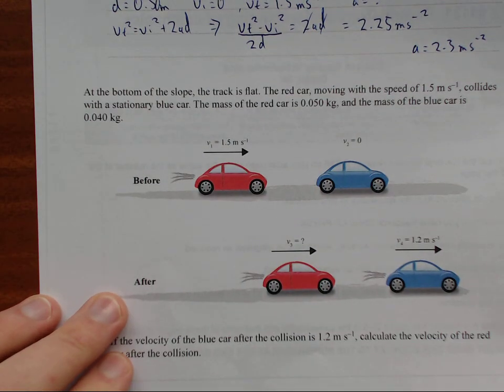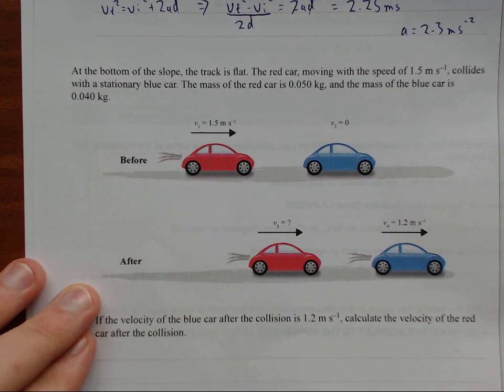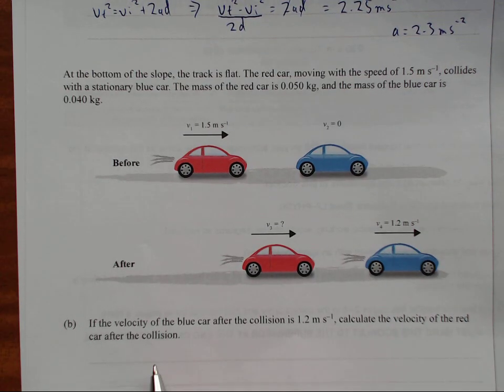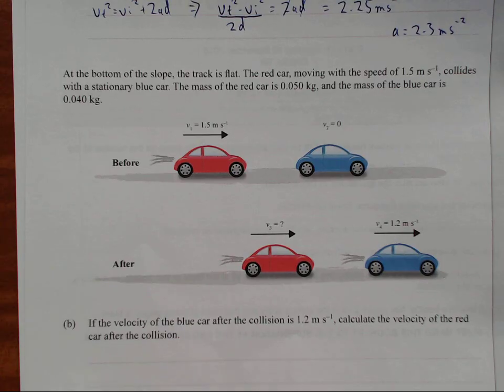Next question. At the bottom of the slope, the track is flat. The red car is moving with a speed of 1.5 meters per second, collides with a stationary blue car. The mass of the blue car is 0.4 kilograms. And we have a diagram here to show what's happening. If the velocity of the blue car after the collision is 1.2 meters per second, calculate the velocity of the red car after the collision.